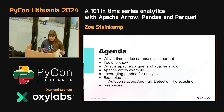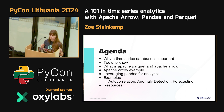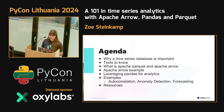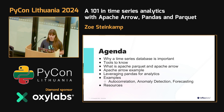We're going to go over why a time series database is important, tools to know, what Apache Parquet and Apache Arrow are, Arrow examples, leveraging pandas for analytics specifically with time series — mainly joining data from a time series database with a SQL DB — and then some examples of autocorrelation, anomaly detection, and forecasting. We probably won't get deep into the examples, but the Jupyter notebooks and documentation are available.